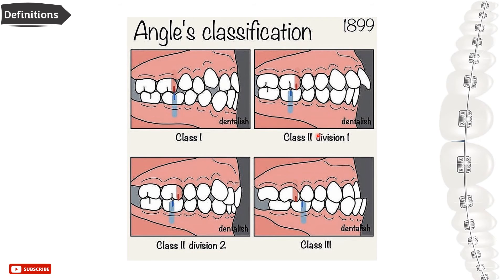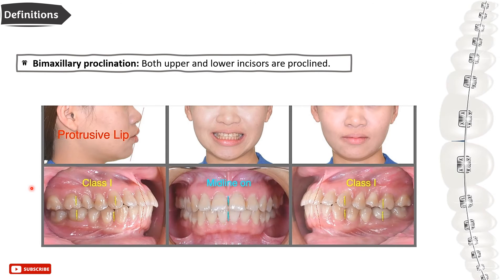This shows the different inclinations of the upper incisors between the two divisions of Class 2. In Class 2 Division 1, the upper incisors are severely proclined and the overjet is increased. In Class 2 Division 2, the upper incisors are upright or even retroclined and the overjet is decreased. In Class 3, the upper and lower incisors are proclined more than normal.